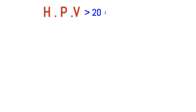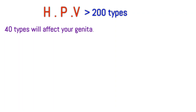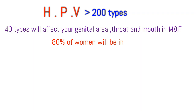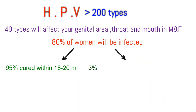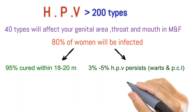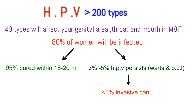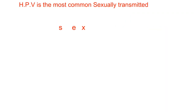There are 200 types of human papilloma virus. About 40 types can affect the genital area, throat, and mouth in male and female. 80% of women will be infected in their lifetime; 95% of them are cured within 18–24 months. In 3–5% of women, HPV persists and results in either warts or precancerous lesions, and 1% develop invasive cancer. HPV is the most common sexually transmitted disease.